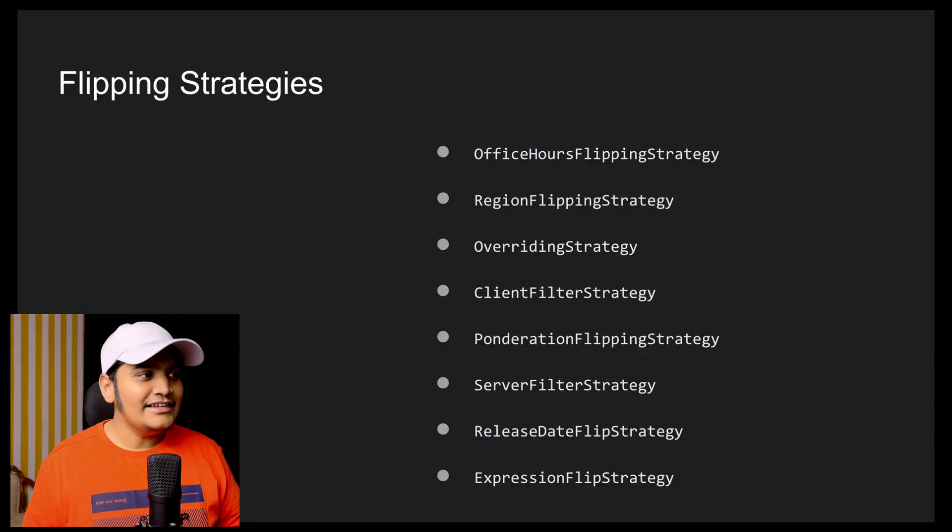The first one is the Office Hours flipping strategy. In this strategy you can define office hours, and within those office hours only, if you want some features to be enabled, you can do that. Suppose you want a feature that is only available during office hours — say 9 to 7 — you can define that particular strategy and that feature will only be enabled during those hours; for the rest of the hours it will be disabled.